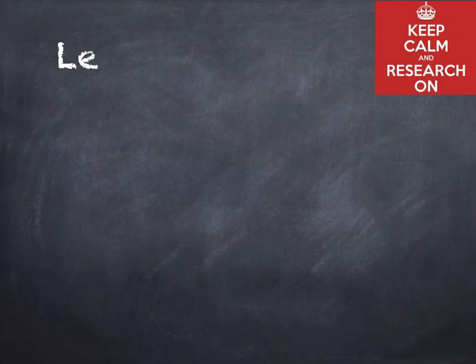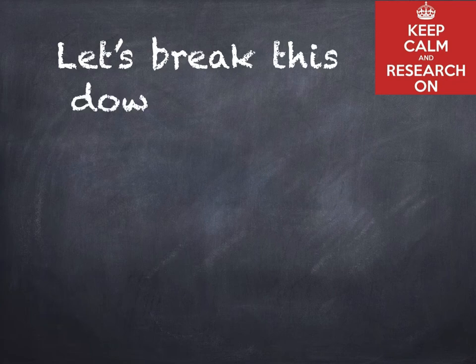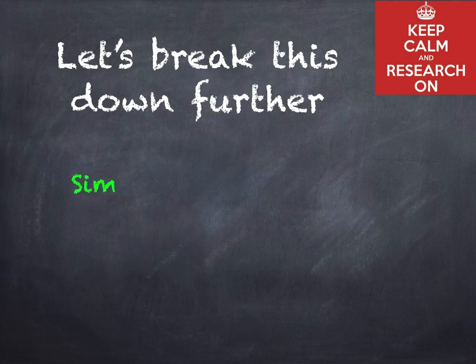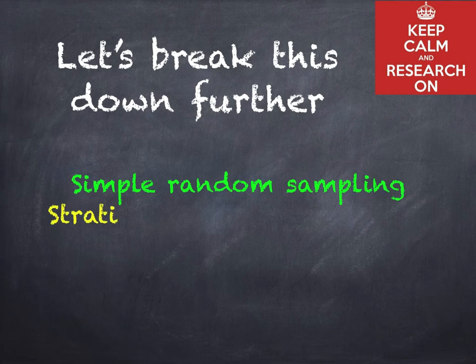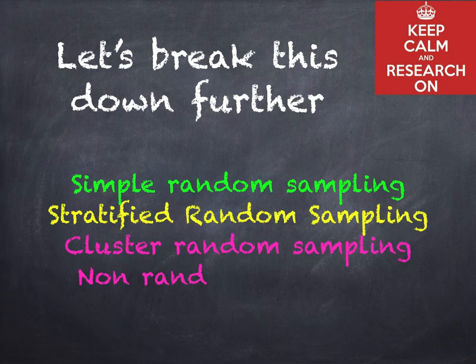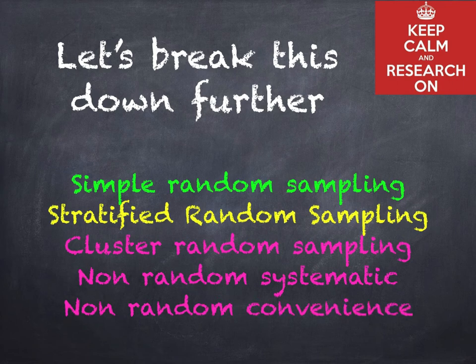There are five different types of sampling we're going to look at today. These are: simple random sampling, stratified random sampling, cluster random sampling, non-random systematic, and non-random convenience. Let's break these down and look at each one in more detail.